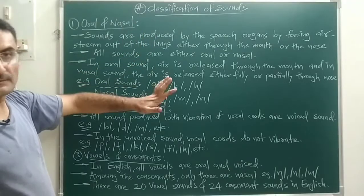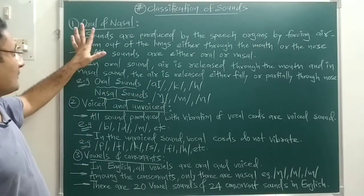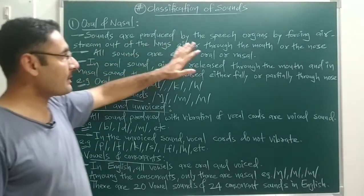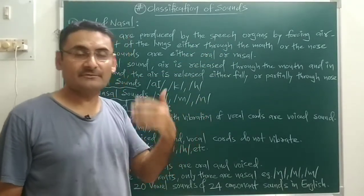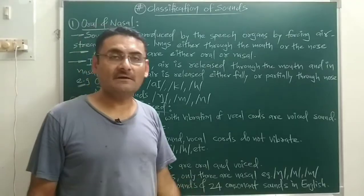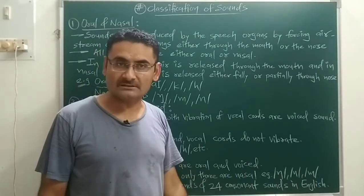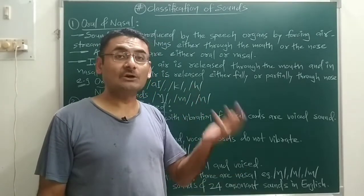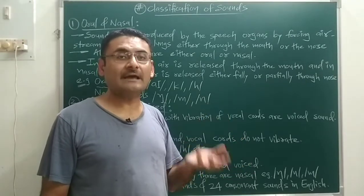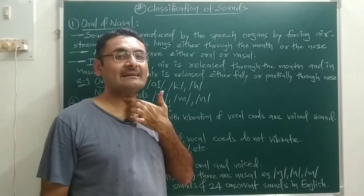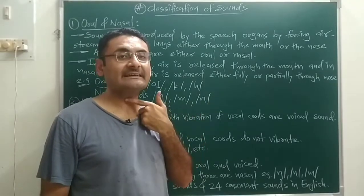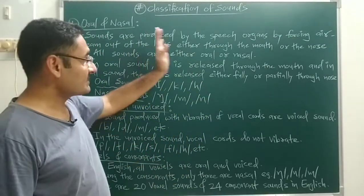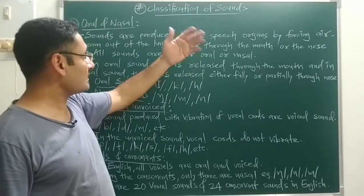The first classification of sounds: there are three types. First is oral and nasal sound. Generally, sounds are produced by the speech organs. If you want to produce any sound, you can produce it with the help of the speech organs. The different speech organs include the lungs, the mouth, the nose, and the vocal cord — the vocal cord is also known as Adam's apple, the part that bulges out in your throat.